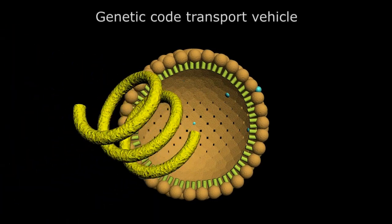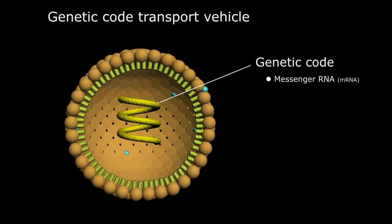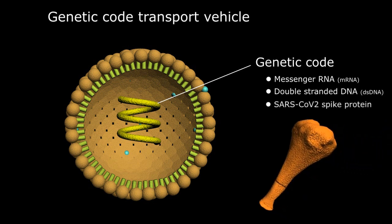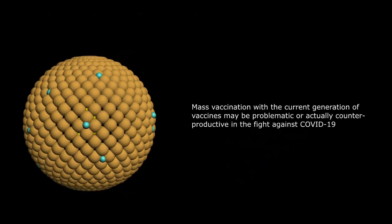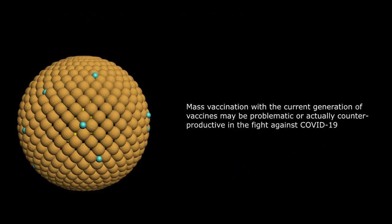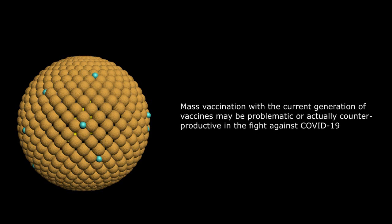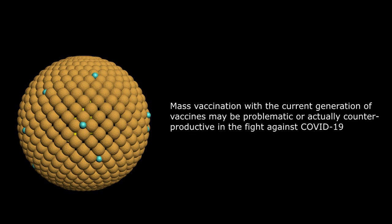By now, we're all familiar with the novel COVID vaccines, a short strand of either messenger RNA or double-stranded DNA encoding for the spike protein of the SARS-CoV-2 virus. Over the next few minutes, I want to explain why mass vaccination with this generation of vaccines may be problematic or actually counterproductive in the fight against COVID-19.